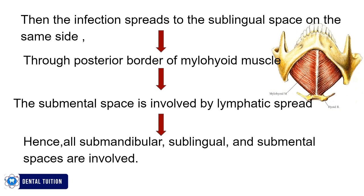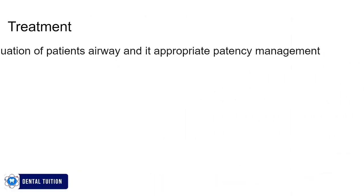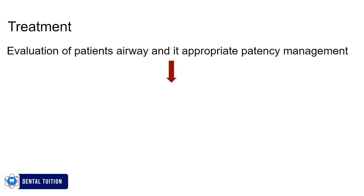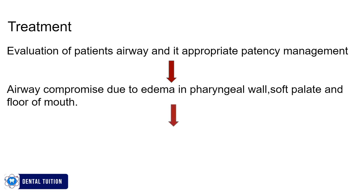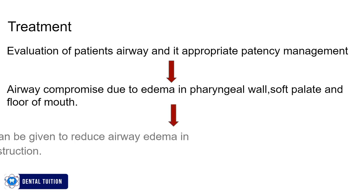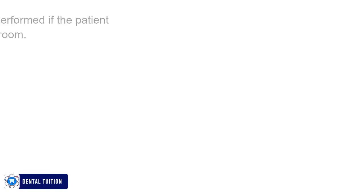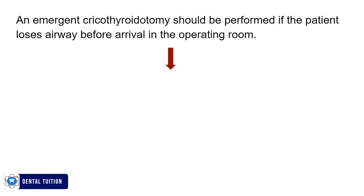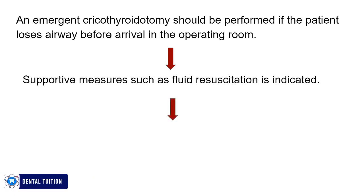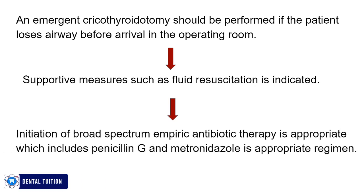Treatment begins with evaluation of the patient's airway and appropriate patency management, since airway compromise can occur due to edema in the pharyngeal wall, soft palate, and floor of mouth. Intravenous dexamethasone can be given to reduce airway edema in a patient with upper airway obstruction. An emergent cricothyroidotomy should be performed if the patient loses the airway before arrival in the operating room. Fluid resuscitation is commonly needed as patients present with hypovolemia due to lack of oral intake. Broad-spectrum empiric antibiotic therapy including penicillin G and metronidazole is the appropriate regimen.